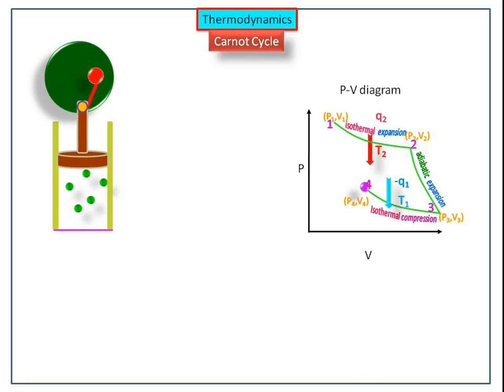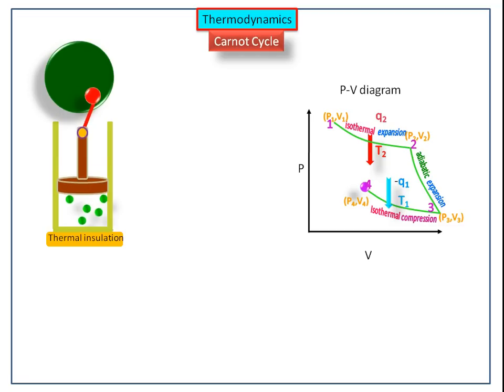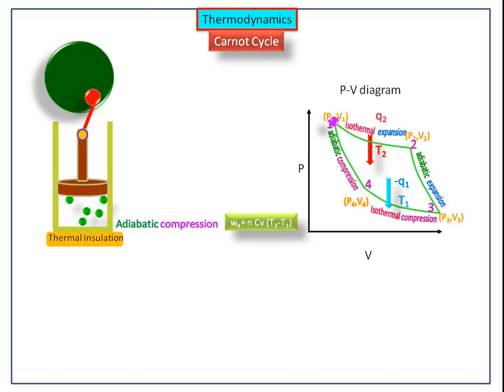Now again the cylinder is thermally insulated. The system undergoes adiabatic compression, so work is done on the system by the surroundings. The work done is NcV(T2 − T1). After completing the adiabatic compression, it returns to its original position, completing one cycle.